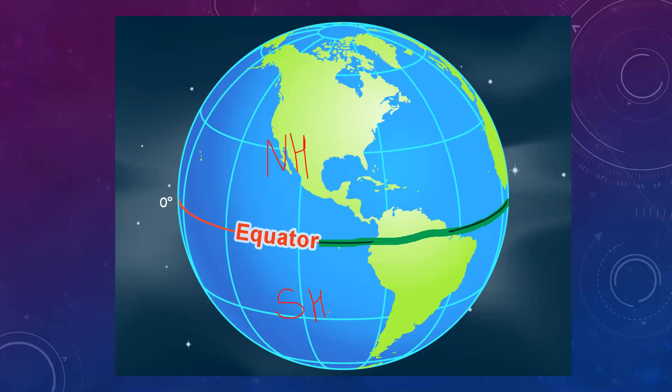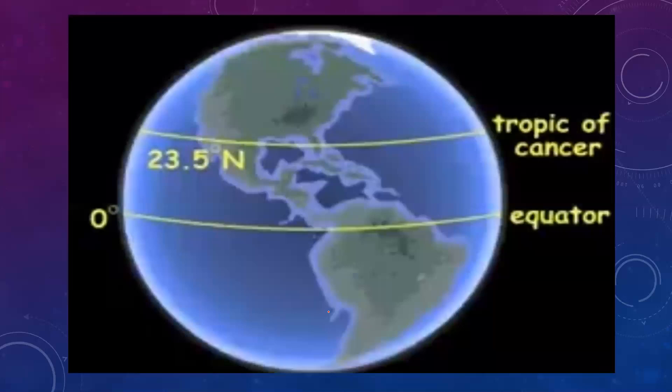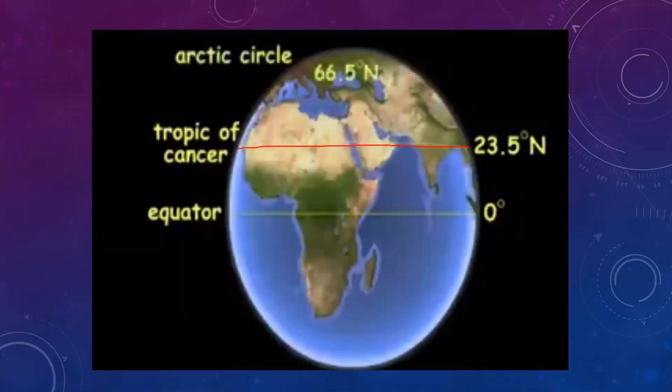Each hemisphere has important latitudes. The equator is measured from 0 degrees to 90 degrees in both hemispheres. The equator lies at 0 degrees latitude. In the northern hemisphere at 23.5 degrees north, the latitude is called the Tropic of Cancer. At 66.5 degrees north, the latitude is called the Arctic Circle. The North Pole is at 90 degrees north.